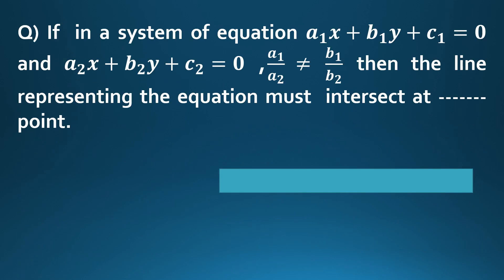First question: In a system of equations a1x + b1y + c1 = 0 and a2x + b2y + c2 = 0, if a1/a2 is not equal to b1/b2, then the lines representing the equations must intersect at how many points?